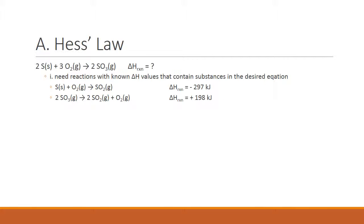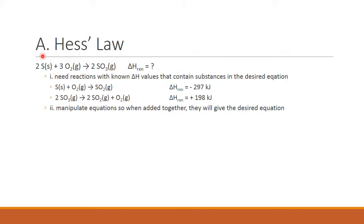These equations would typically just be given to you, or you could look them up. What we're going to do is manipulate these given equations so that when we add them together, their sum equals our target equation. Looking at the target equation, I see sulfur as a solid reactant. In the given equations, sulfur appears in the first one, but there's only one mole, while we need two moles. So I need to multiply that entire equation by two.